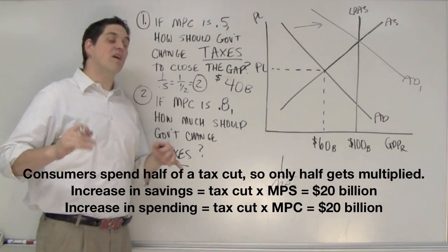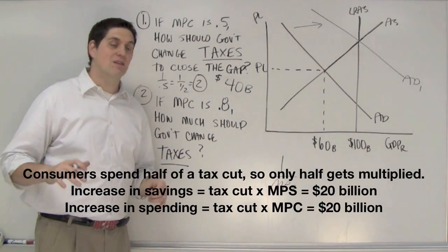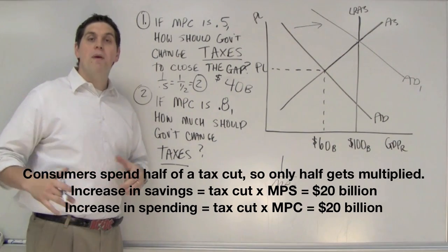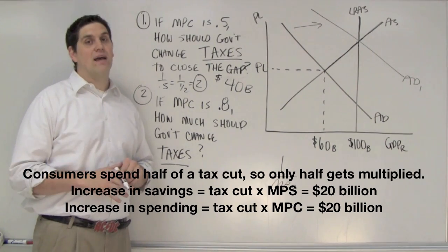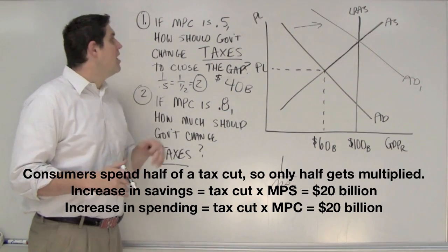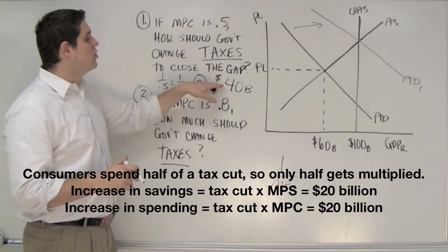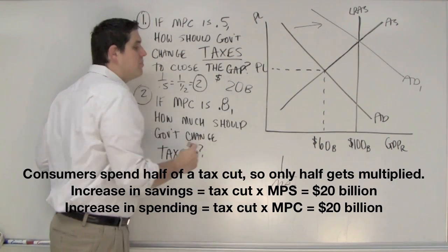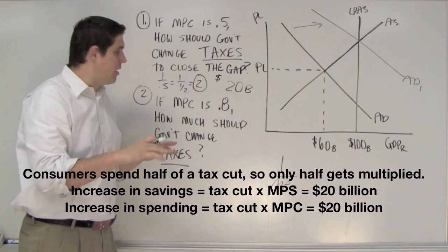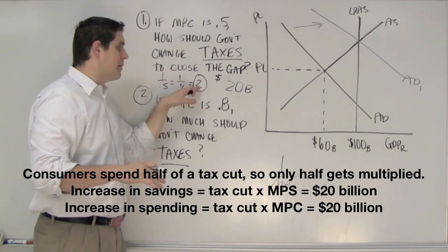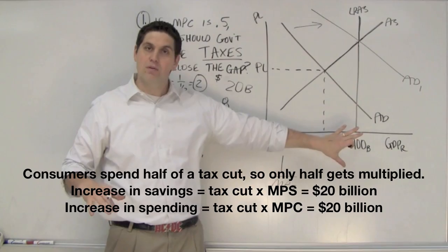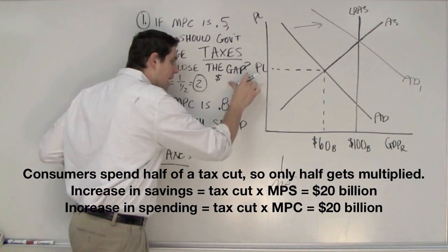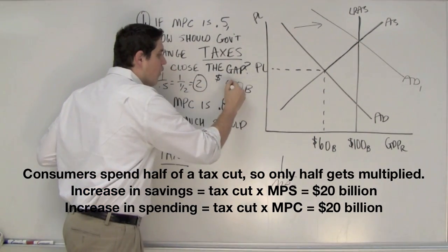The point is this: if the government cuts taxes by $40 billion, people will save half that tax cut — they save $20 billion — leaving $20 billion to be used in the economy. That gets multiplied times 2, which closes the $40 billion gap. So the right answer, no doubt about it, is $40 billion.